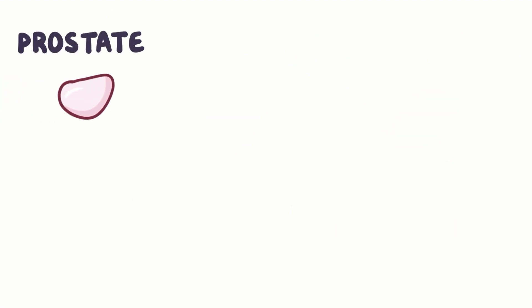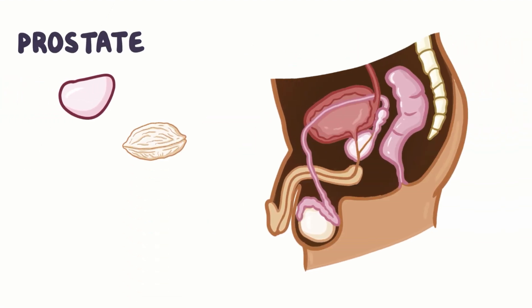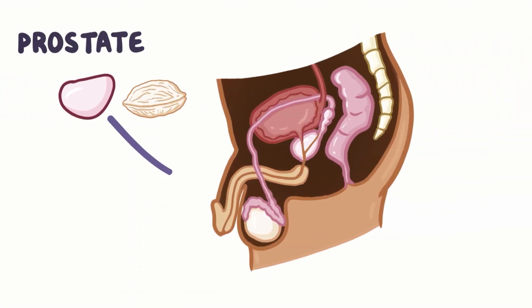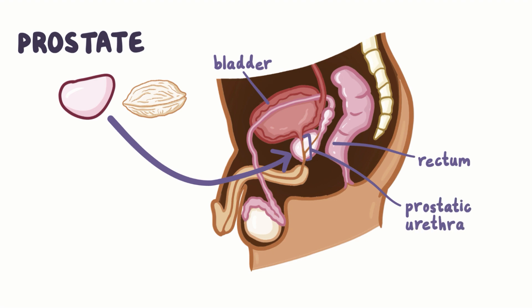The prostate is a small gland, about the size and shape of a walnut, that sits under the bladder and in front of the rectum. The urethra, which is the tube through which urine leaves the bladder, goes through the prostate before reaching the penis. That part of the urethra is called the prostatic urethra.